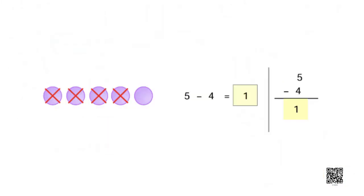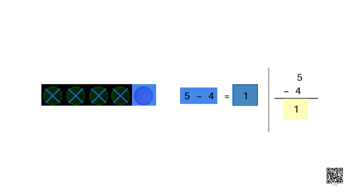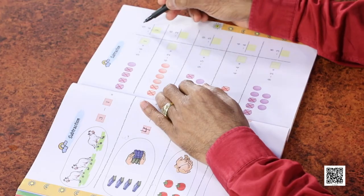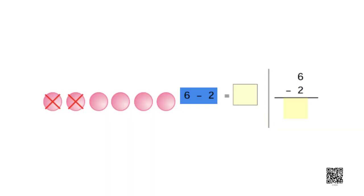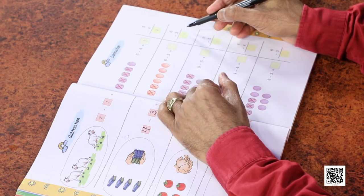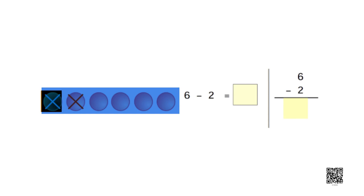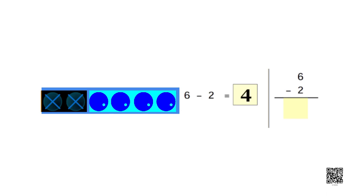Let us find out what is 5 minus 4. 5 minus 4 is equal to 1. There are 1, 2, 3, 4, 5 objects and 4 has already been taken - so how many are left? We can also write it one below the other, and the result left over is written here. This is another way of writing subtraction. For 6 minus 2, either we write it horizontally: 6 minus 2 equal to 4, or vertically. You have to fill in the blank: there are 1, 2, 3, 4, 5, 6 objects, 2 have been taken away, so 1, 2, 3, 4 are left - write 4.